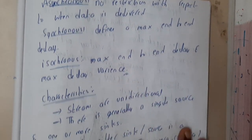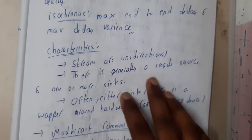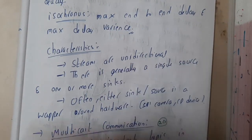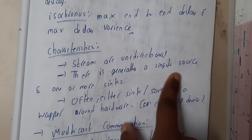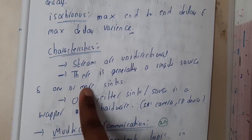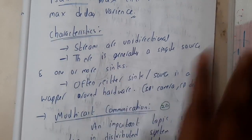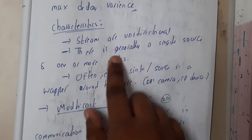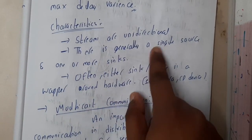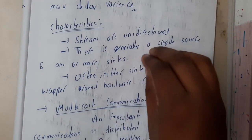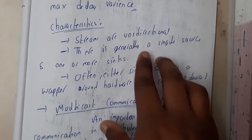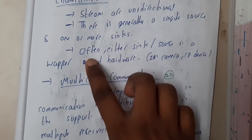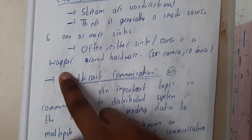The characteristics include that streams are unidirectional — that is, in a single direction. There is generally a single source and one or more sinks. Basically, if you are doing a live stream on YouTube, your data will be sent to YouTube and YouTube will share it with everyone.